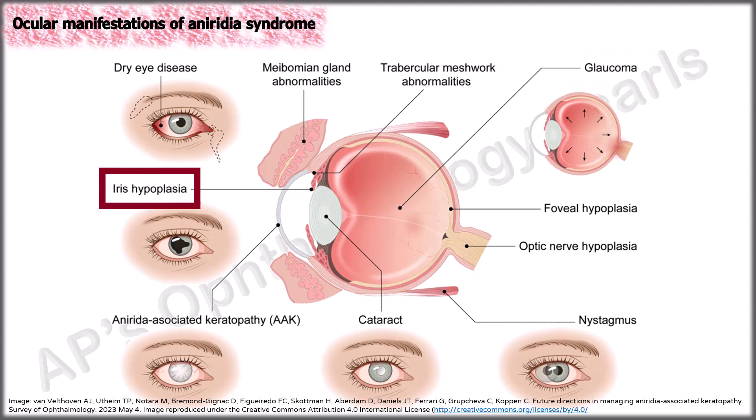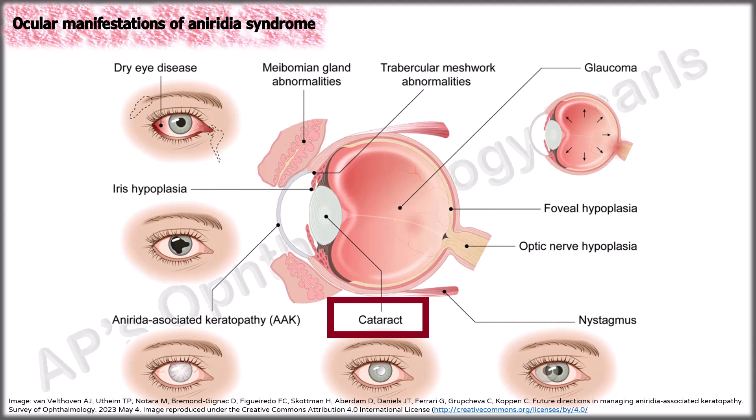Iris hypoplasia is the hallmark sign of aniridia and may vary from very minimal to iris tissue only observed by gonioscopy and anterior segment OCT. Cataract occurs in greater than 80-90% of patients and is often in the form of a polar cataract. Often there are also radiating posterior subcapsular opacities in the midperipheral region that later form a ring on the posterior capsule.